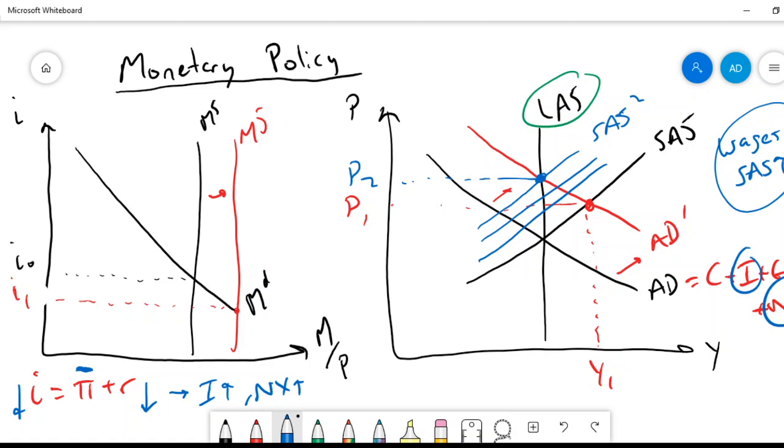However, as a preview of the next video, if there's an aggregate demand problem, since monetary policy operates on aggregate demand, monetary policy is going to be really good at fixing aggregate demand problems, just like fiscal policy. And both of them are going to be kind of bad at fixing supply-side recessions.